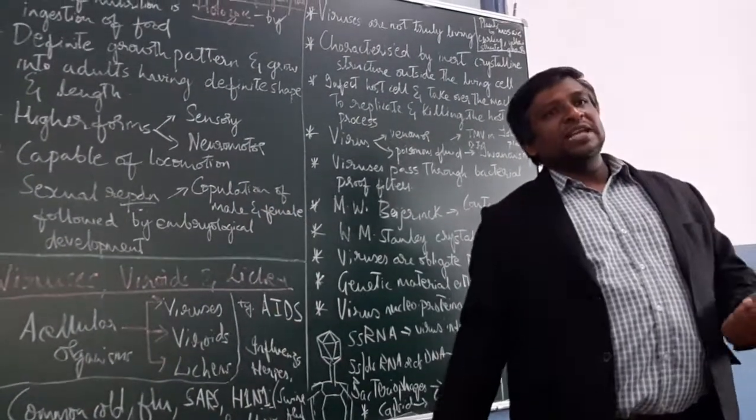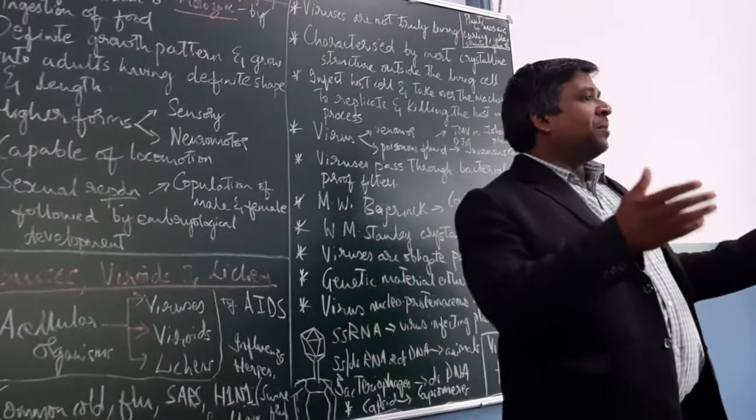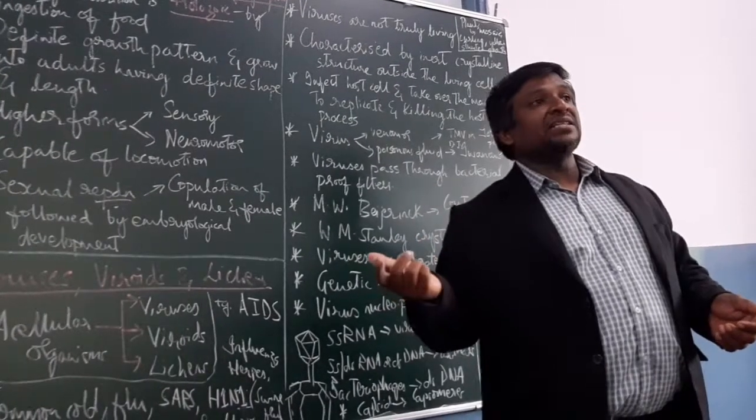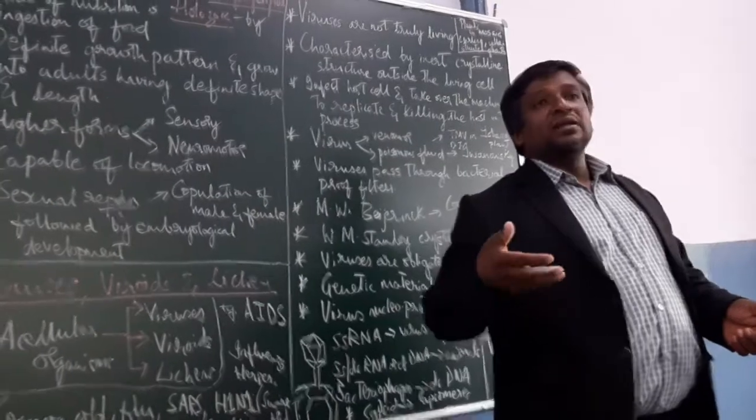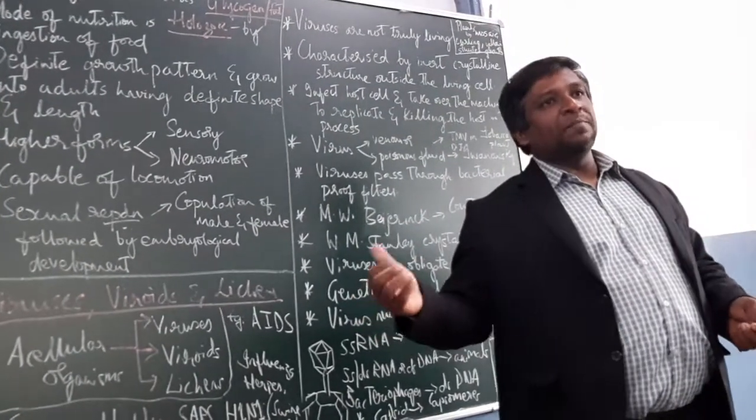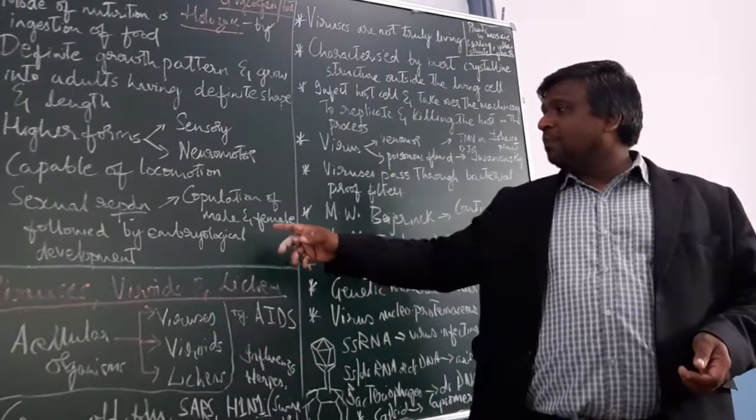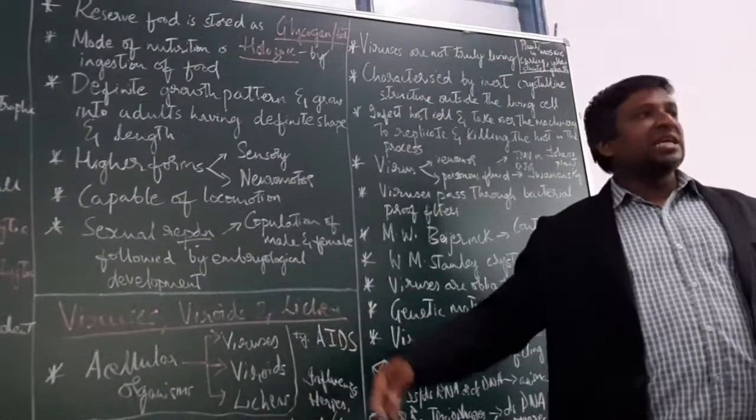Sexual reproduction takes place in the majority of animals. They have genital organs or copulating organs. There is sexual reproduction, copulation, or sexual intercourse - mating and copulation of male and female, followed by embryological development.